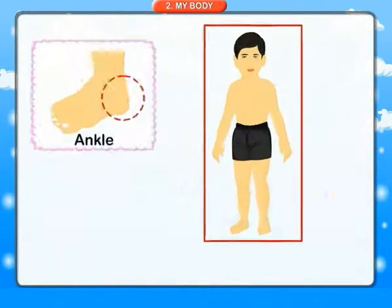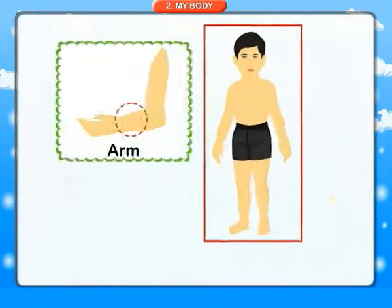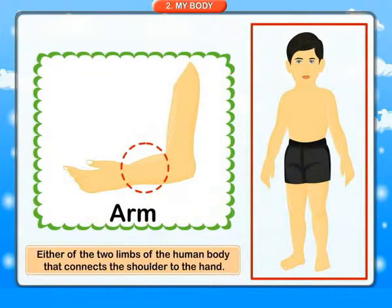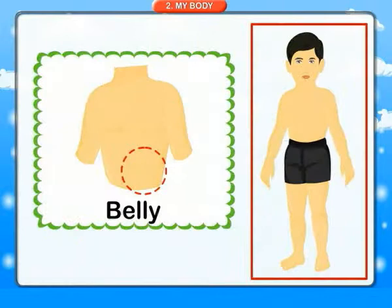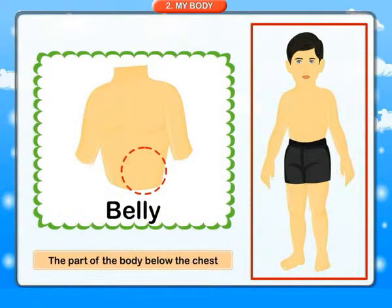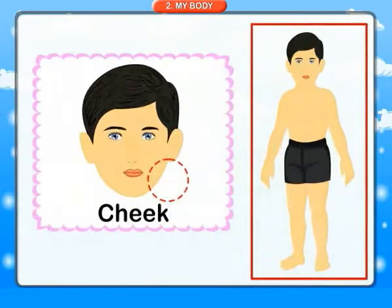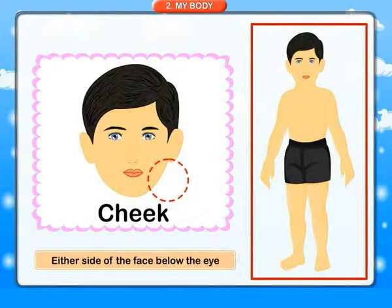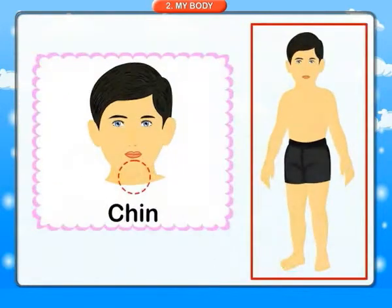My body. Ankle: the joint connecting the foot to the leg. Arm: either of the two limbs of the human body that connects the shoulder to the hand. Belly: the part of the body below the chest. Cheek: either side of the face below the eye.